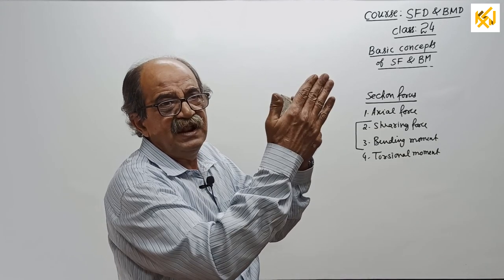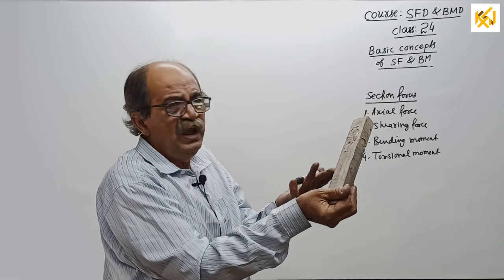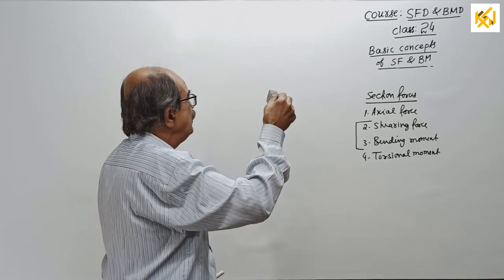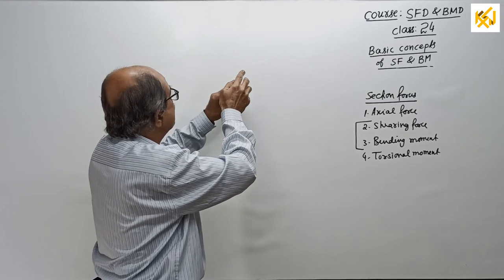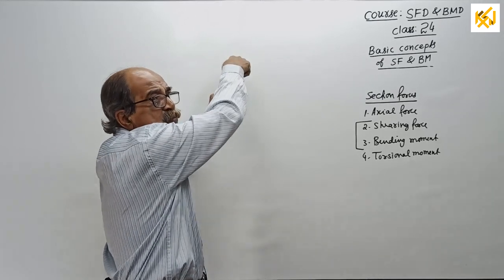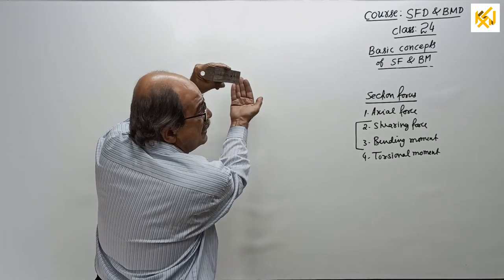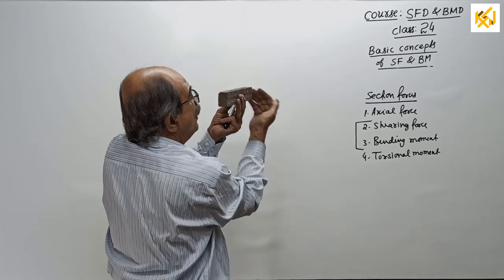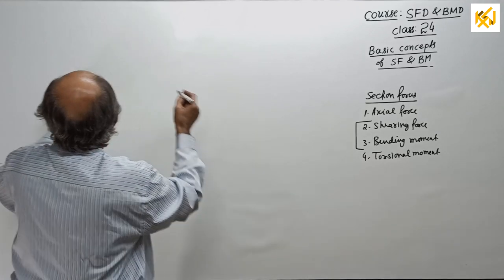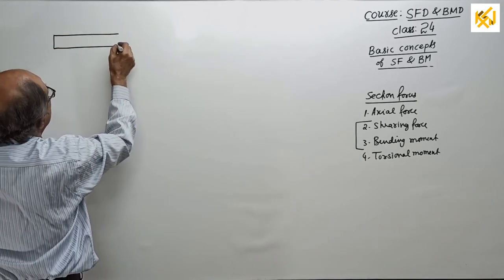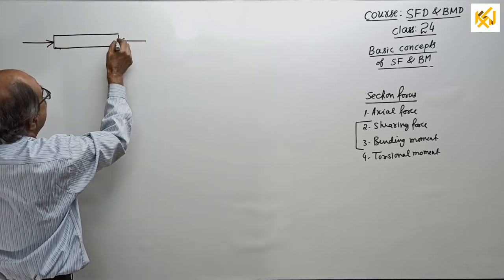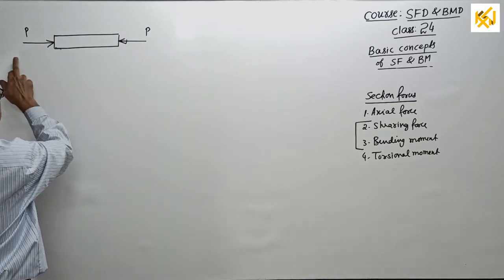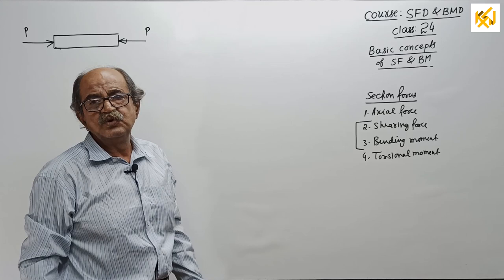I will start one by one from axial force. I have a small model here. If I apply a force, it moves — there is no effect until it gets a support. Once it touches the board and gets a support, if I apply further force it will not move. Displacement is prevented, and from there you get a reaction. So this member is subjected to a force one way and a reaction from the support the other way.